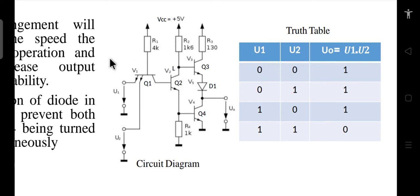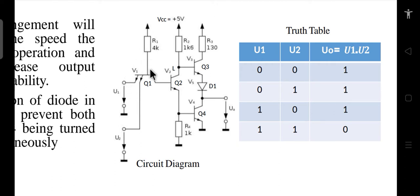Let's understand what happens if we apply all four possible combinations at the two inputs. If both inputs are zero — since this is an NPN transistor — whichever input is low causes the base-emitter junction to become forward biased, because this voltage is low and the supply voltage is high. So in all three cases where at least one input is zero, the base-emitter junction of Q1 is forward biased.